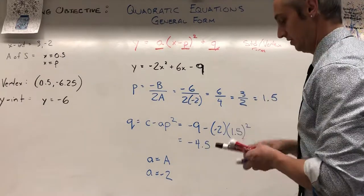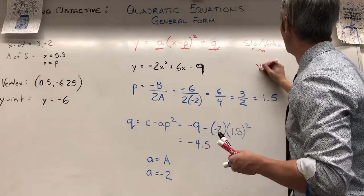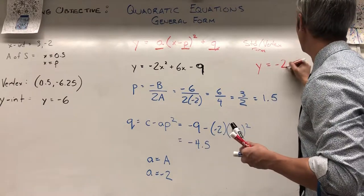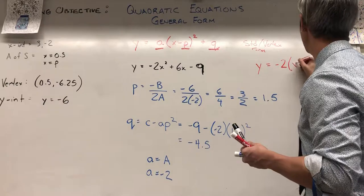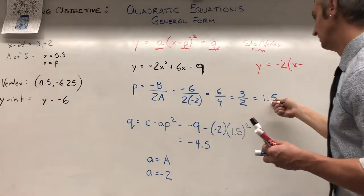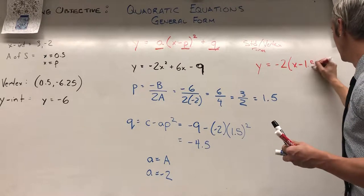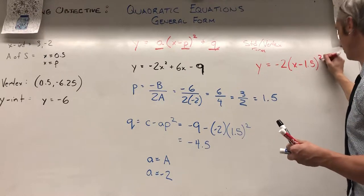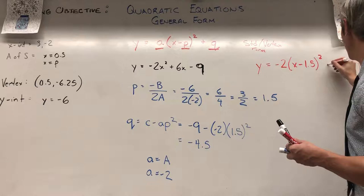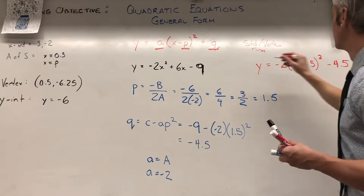Plugging back into standard vertex form: y = -2(x - 1.5)² - 4.5. So a = -2, p = 1.5, q = -4.5. We can gather all of our key points from this form.